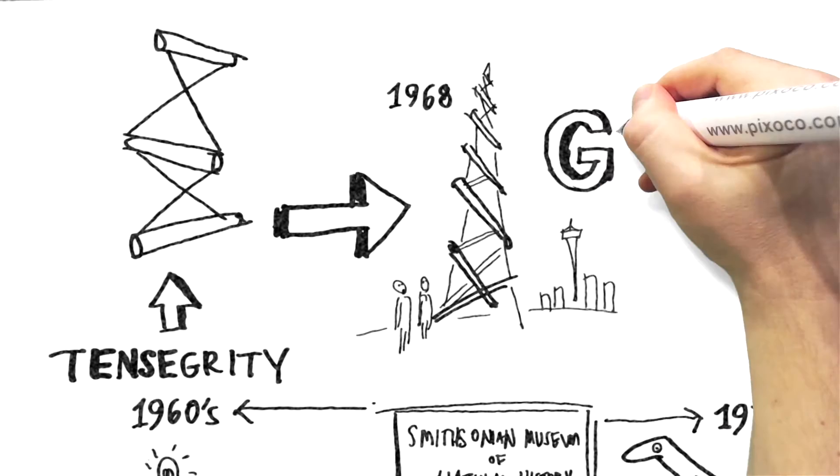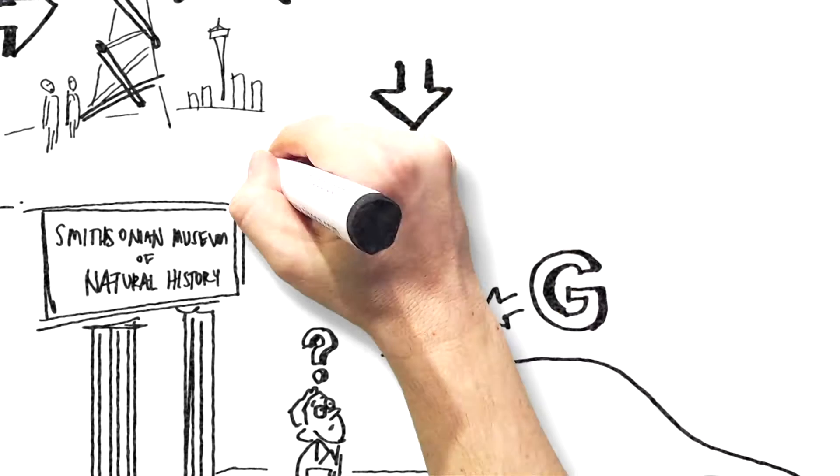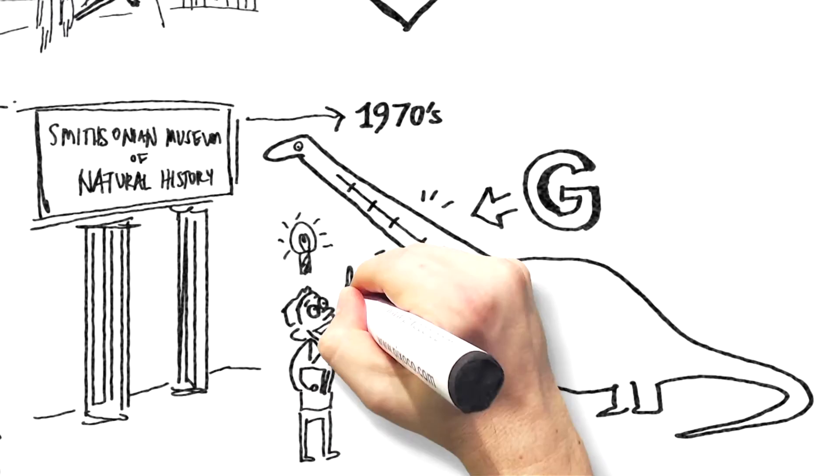Levin realized that for the body to work it needs just this. It's the only model that by itself fits all living organisms. He called his discovery biotensegrity, and that changed our view of how the human body is built.